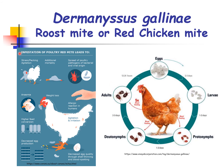This diagram also shows that infestation of the poultry red mite can lead to stress and pecking agitation, additional mortality, spread of pathogens of bacterial and viral origin. We also have anemia, since these parasites are blood suckers, weight loss, agitation and irritation, higher feed conversion, decreased egg production, decreased egg quality through shell thinning and blood spotting, and allergic reactions in humans.